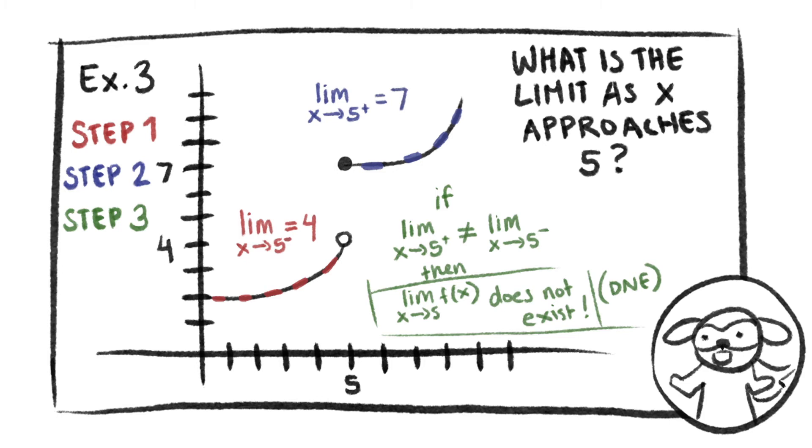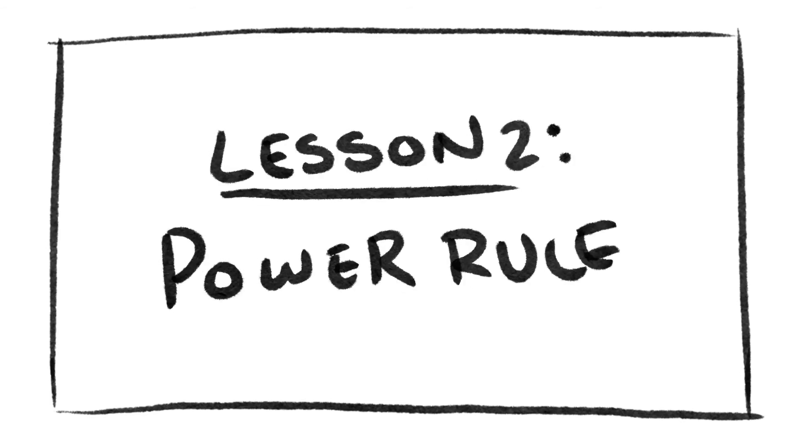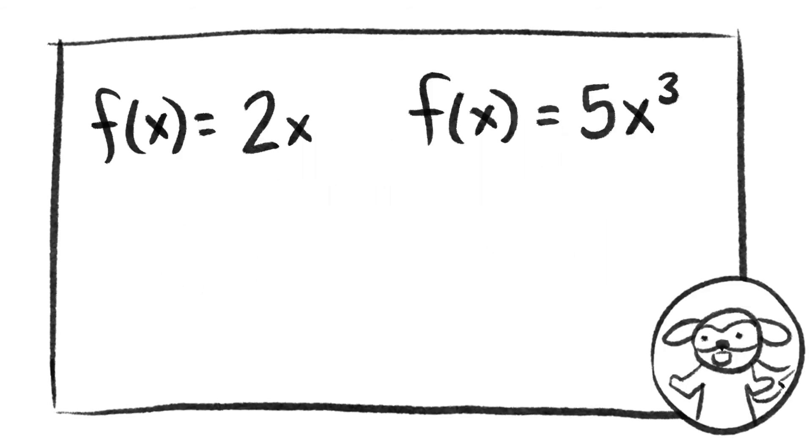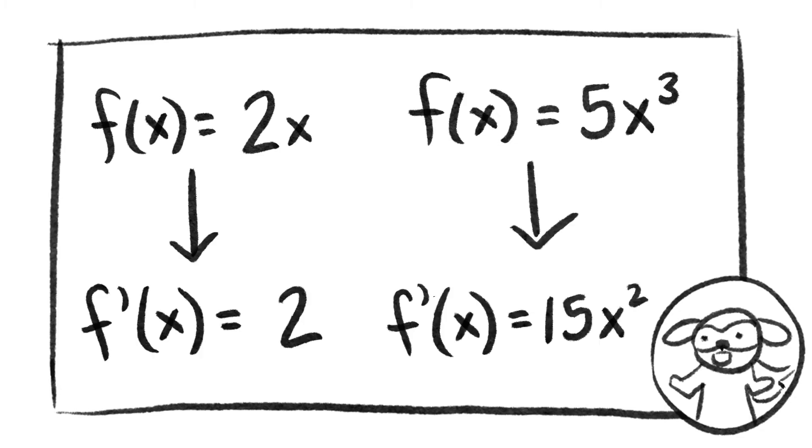Let's move on to the next lesson. Lesson 2: Power Rule. We have two functions, 2x and 5x cubed. When we take the first derivative of 2x it will equal 2. For 5x cubed, it will equal 15x squared. How did we get these, you ask? We use the power rule. It's super easy.